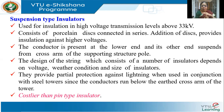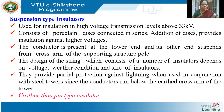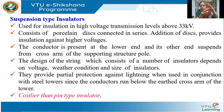At the bottom end, it supports the conductor, and on the top end, it is connected to the cross arms of the supporting structure. These discs have to be designed, and we will see how in the next slides. These type of insulators also provide partial protection against lightning when used in conjunction with steel towers, since the conductors run below the cross arm. If a lightning strikes, it will strike the cross arm, which would have been grounded, so the conductor is protected.